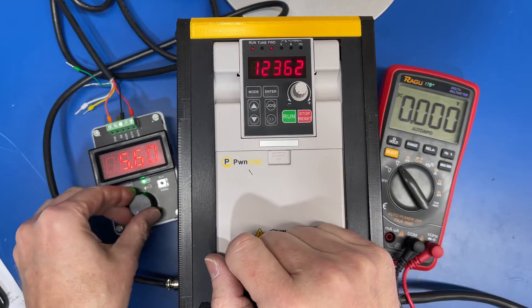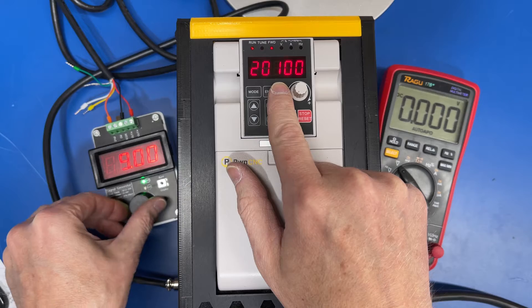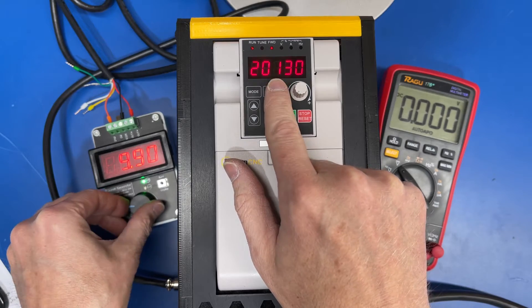So now over here on our signal generator, if we bump that all the way up to 10 volts, we can see that the RPMs are increasing, but eventually it maxes out.